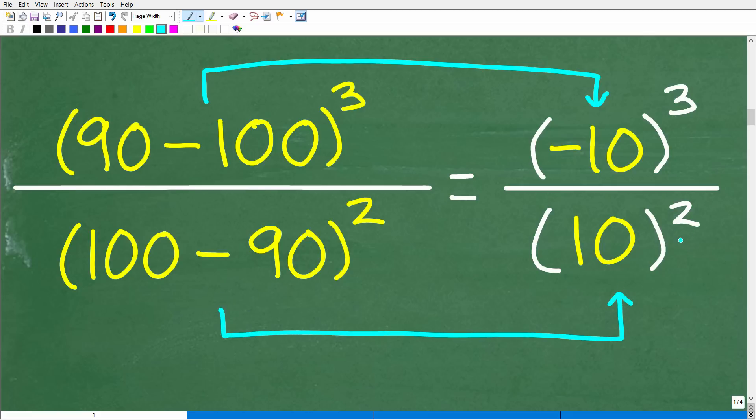Now, some of you might say, should we just finish out this problem? Should I just take this negative 10 and cube it and then just kind of do this math? No, you don't want to do that. You don't want to do any multiplication too quickly when you're dealing with a fraction situation.